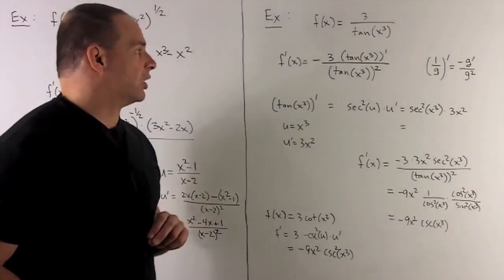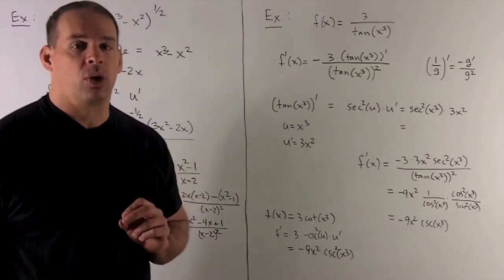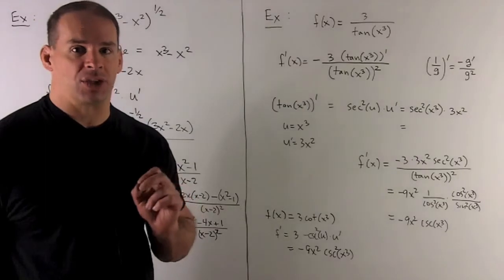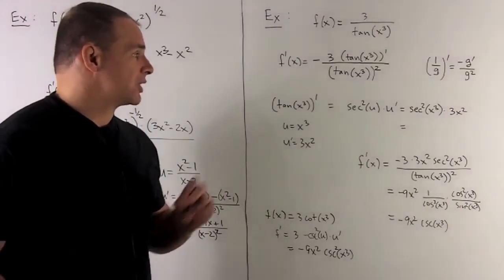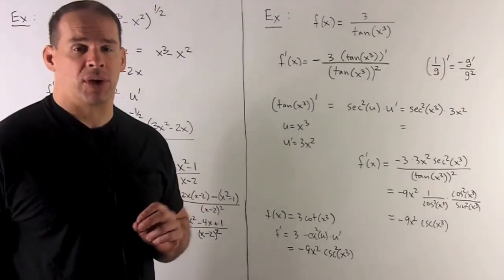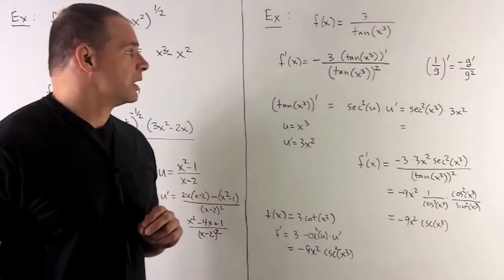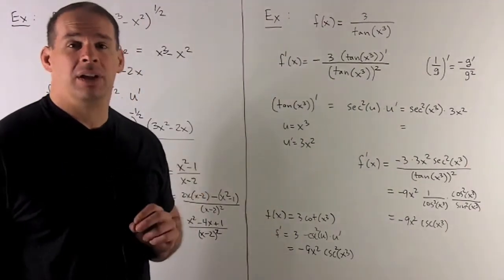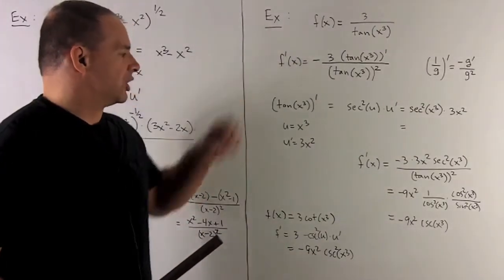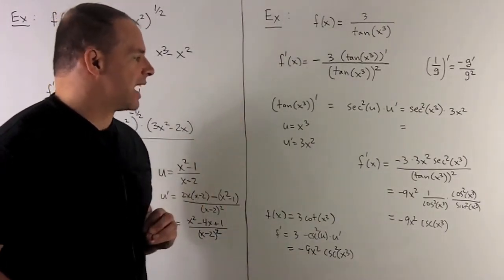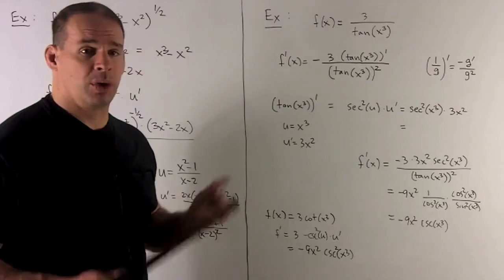Now I need to find the derivative of tan x cubed. That'll be a chain rule — let u equal x cubed, so u prime is 3x squared. The derivative of tangent is secant squared of u. So tangent u goes to secant squared u, multiplied by u prime, giving secant squared of x cubed times 3x squared. Putting that back into our equation, it collapses to minus 9x squared times secant squared x cubed over tan x cubed quantity squared.